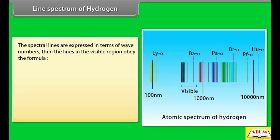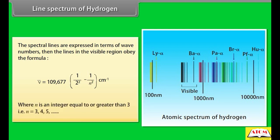The spectral lines are expressed in terms of wave numbers. The lines in the visible region obey the formula: wave number = 109,677 × (1/2² − 1/n²) per centimeter, where n is an integer equal to or greater than 3, that is, n = 3, 4, 5, and so on.